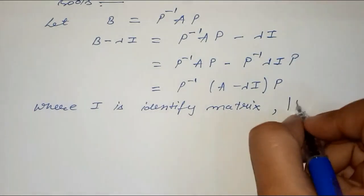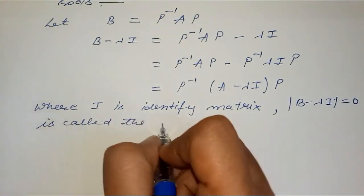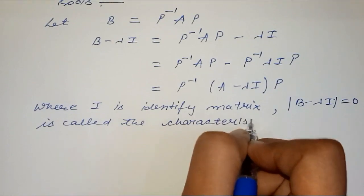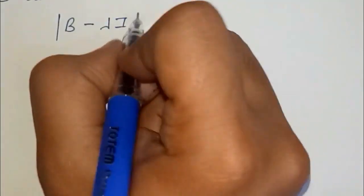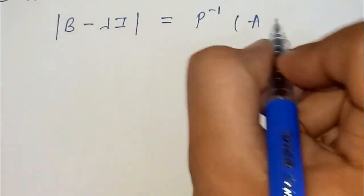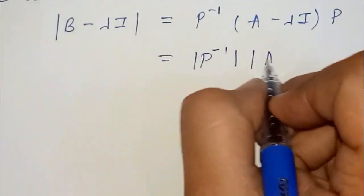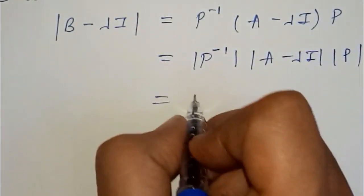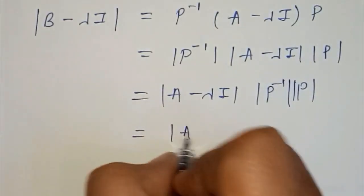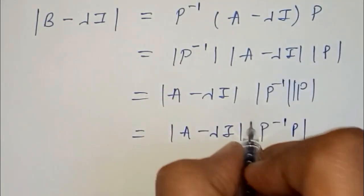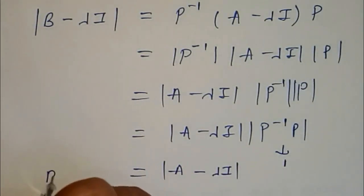B minus lambda I equals 0 is called the characteristic equation. The magnitude of P inverse (A minus lambda I) P, and P inverse P equals 1. So A minus lambda I equals B minus lambda I.